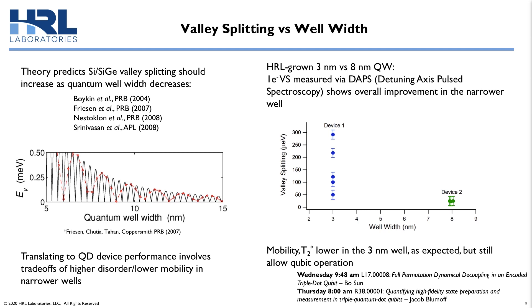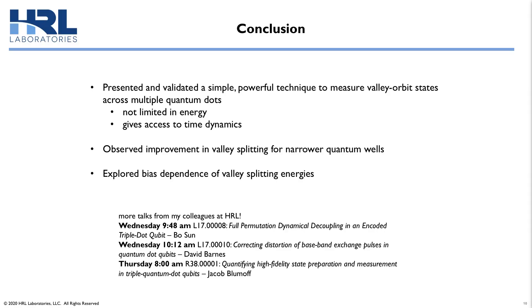As we expected, the mobility and T2* are indeed lower in the three nanometer well, but we're still able to achieve good qubit performance. For more information about three nanometer device performance, I encourage you to listen to Bo Sun's talk as well as Jacob Blumhoff's talk. DAPS is a simple and powerful technique to measure the valley orbit excited states — it's not limited in energy and also gives us access to the time dynamics of our states. Using DAPS to measure valley splitting, we observed a higher average valley splitting for narrower quantum well widths, and we were also able to explore the dependence of the valley splitting on voltage bias.